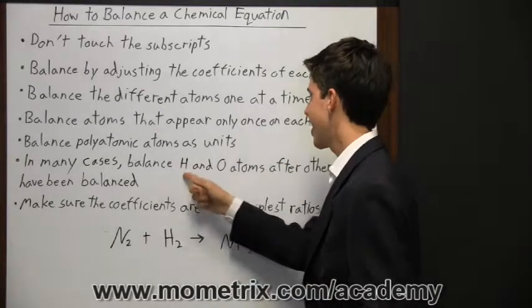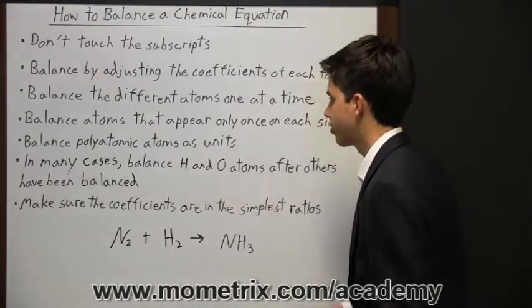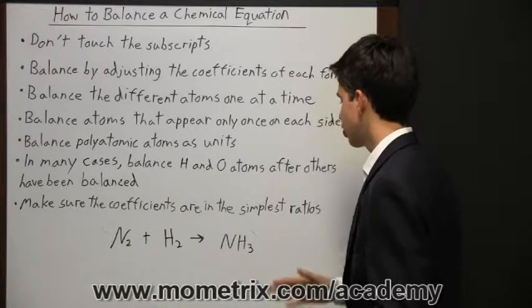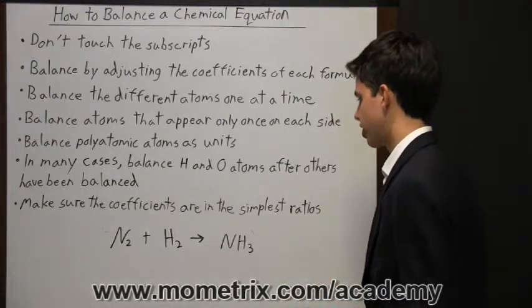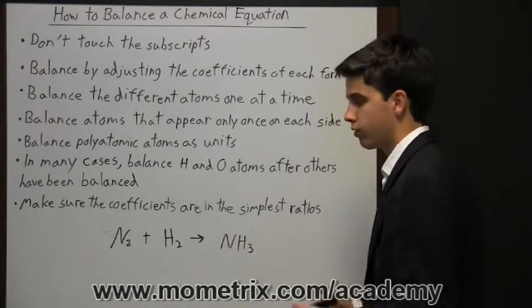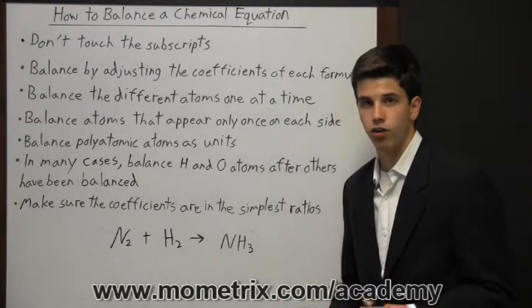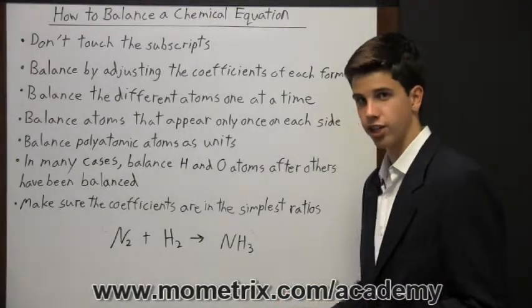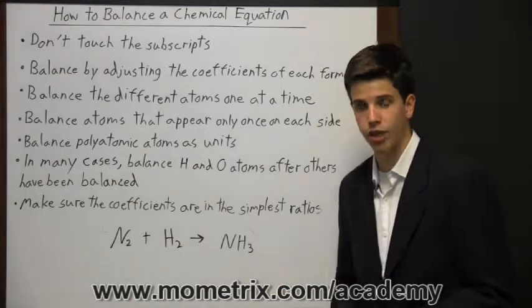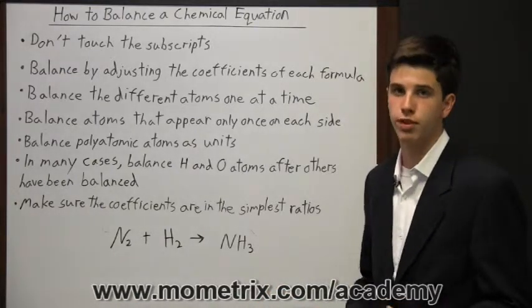In many cases, balance hydrogen and oxygen atoms after others have been balanced. Make sure the coefficients are in the simplest ratios. So in other words, if you had a coefficient of four on one side of the equation and a coefficient of two on the other side, you can reduce those coefficients to be two and one.